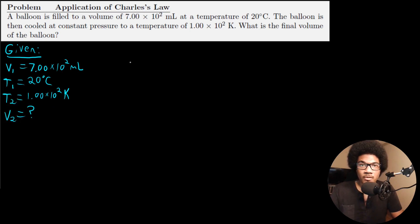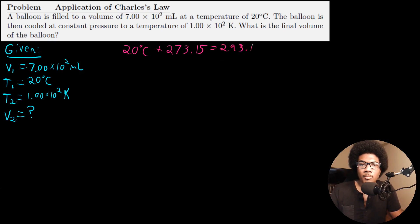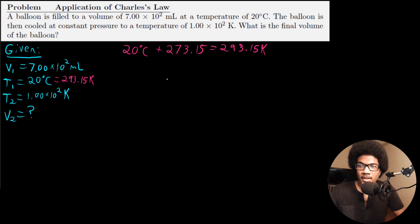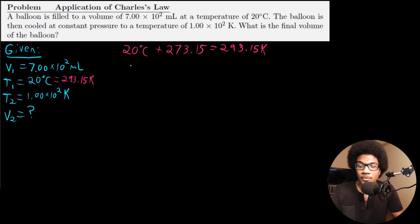To convert the temperature from Celsius to Kelvin, we take 20 degrees Celsius and add 273.15, which gives us 293.15 Kelvin. So T1 is equivalent to 293.15 Kelvin. Now we can apply Charles's Law with consistent units.